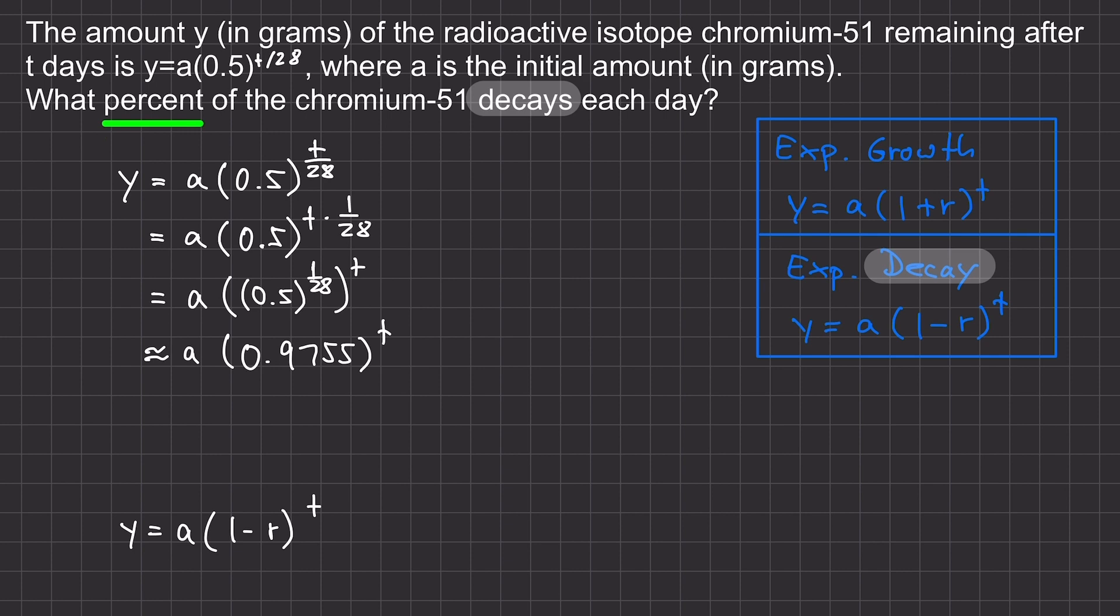The last step we need to do is to write the 0.9755 as 1 minus r and then solve for r to get the percent decrease.